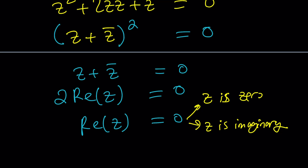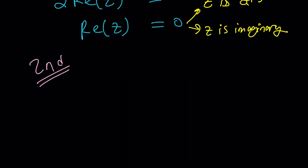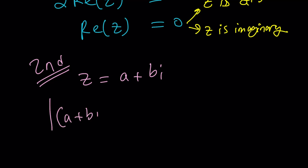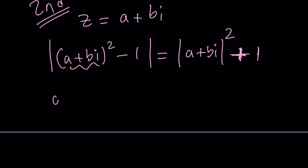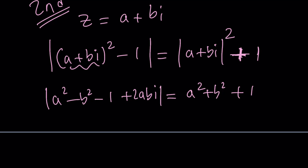For the second method, I'm going to use the name of this channel: a plus bi. So let z = a + bi and substitute. We get the absolute value of (a + bi)² − 1 equals the absolute value of (a + bi)² + 1. Squaring z gives a² − b² + 2abi, so bringing the 1 over we have the real and imaginary parts separated. The right side simplifies to a² + b², which is z·z̄ from the first method.